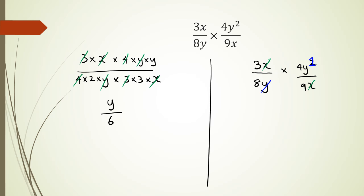And with 3 and 9, 3 divided by 3 is 1, 9 divided by 3 is 3. And with 8 and 4, 4 divided by 4 is 1, 8 divided by 4 is 2. And what you'll notice is in the numerator, I have just one y. And in the denominator, I have a 2 and a 3, which is 6. And that's basically how you do multiplication.